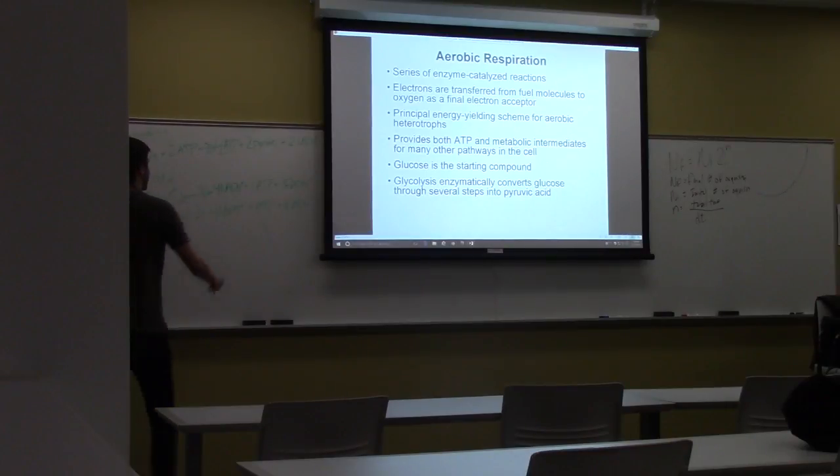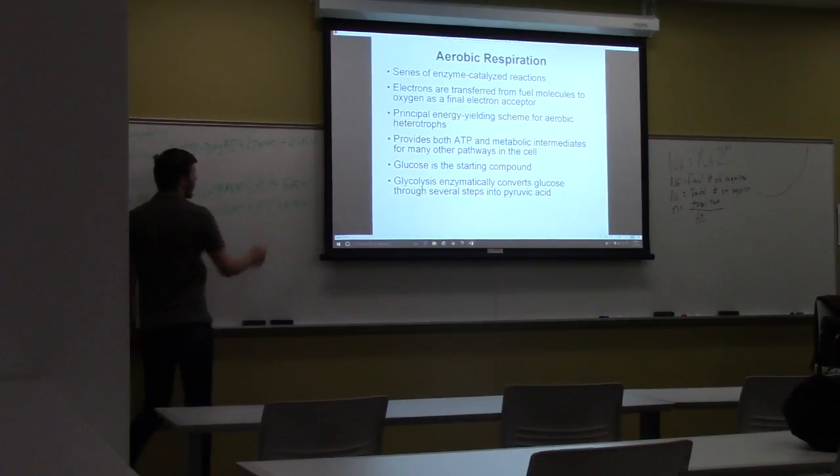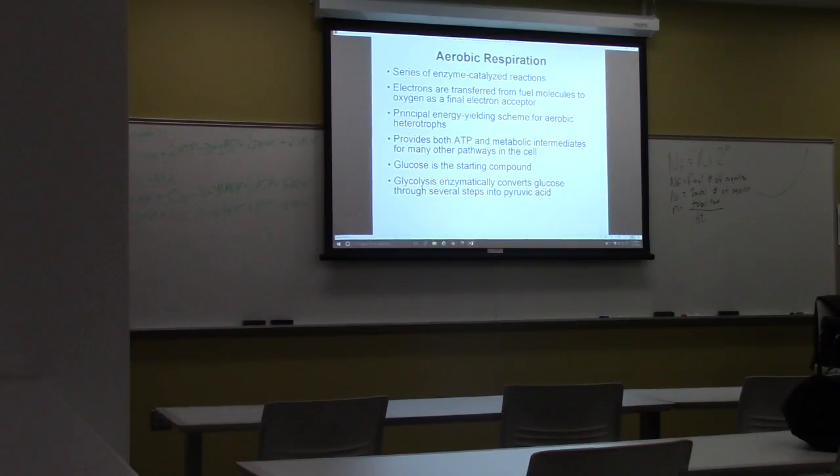So, where did these two ATP come from? Substrate level phosphorylation. Right? So right now we've got four ATP. But as I said, we get about 38. So where did most of the ATP come from? The electron transport chain.